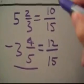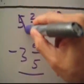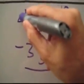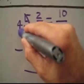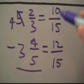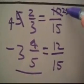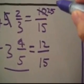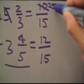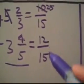Now we see that we cannot subtract 12 from 10 because 12 is bigger. So this is where the borrowing comes in. We're going to cross out this 5, make it a 4. We're going to go over here, add 15 and 10 which is 25. This becomes our new numerator. Now we've got 25 minus 12 which would equal 13.